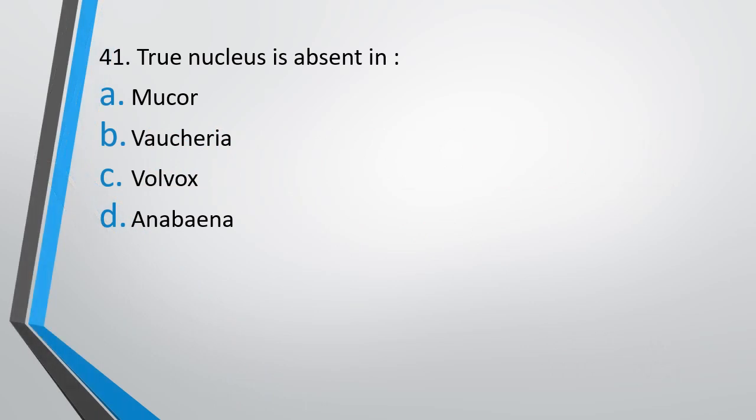Question number 41. True nucleus is absent in: Mucor, Vuceria, Volvox, or Anabana? True nucleus is absent in - the correct answer is Option D, Anabana.